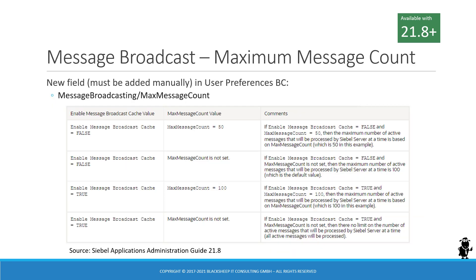In the message broadcasting area, the Siebel Applications Administration Guide tells us there is a new field available: message broadcasting slash max message count. That field has to be added manually to the user preferences BC and then exposed in the user preferences applet so that administrators or users can set it.